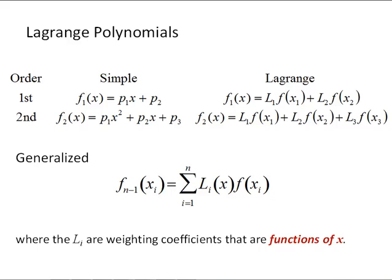So what's a Lagrange polynomial? It's basically a stylized way of writing a polynomial. A first order polynomial — analogous to y equals mx plus b, the equation of a line — would be written as l1 times f of x1 plus l2 times f of x2, where f of x1 and f of x2 are known data values, and l1 and l2 are called weighting coefficients, and they are functions of x.